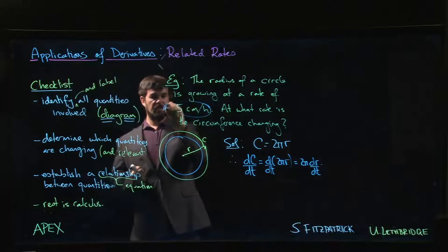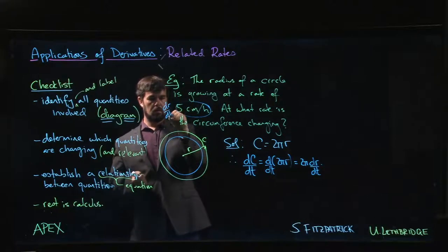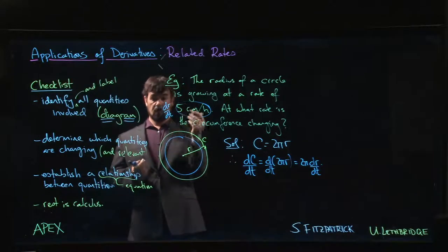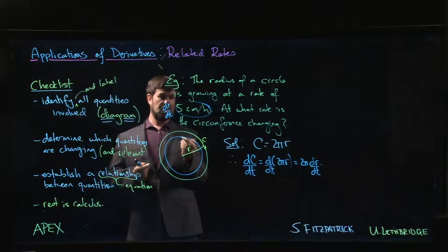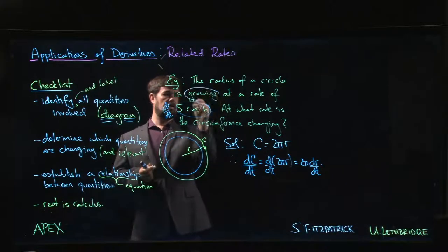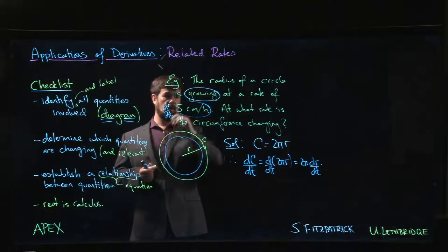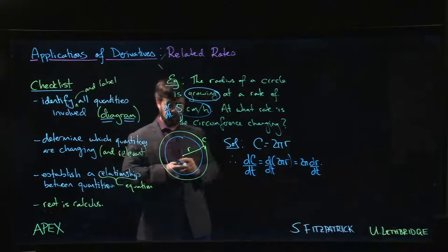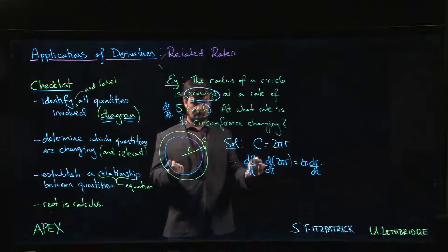The only other thing you want to be careful about is rates could be either positive or negative. You have to look at the problem and see, look for keywords. Growing suggests that the quantity is increasing, getting bigger, so the derivative should be positive. Positive derivative for increasing, negative for decreasing.